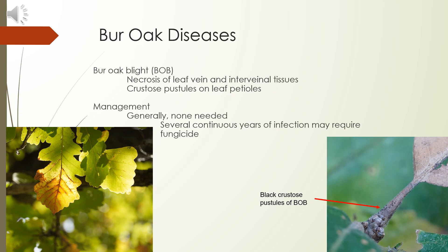The browning starts from the most distal end of the leaf and works towards the petiole. Another indicator of BOB are the pustules that form near the base of the petiole, which prevents the leaf from detaching once it senesces. This means that these dead leaves remain on the tree throughout most of the winter and can be an identifying symptom.